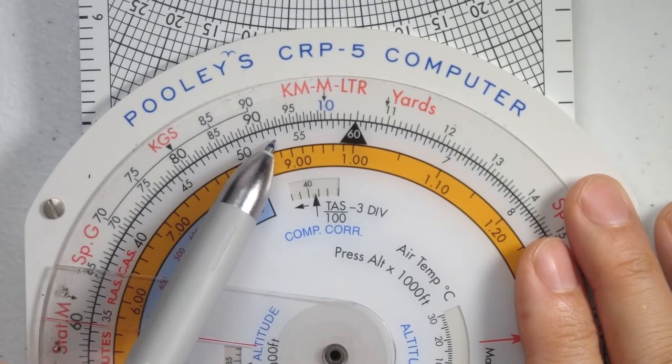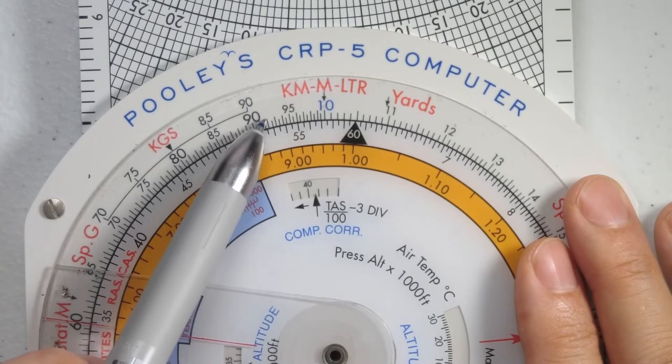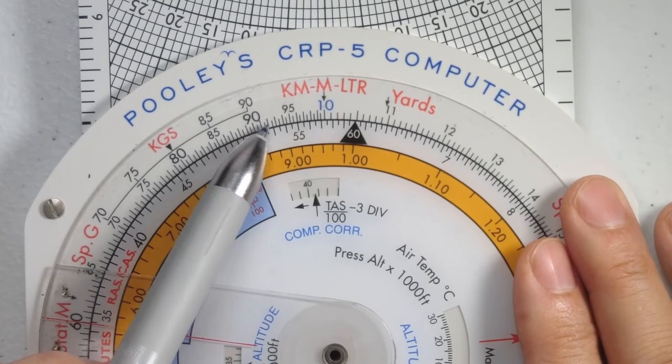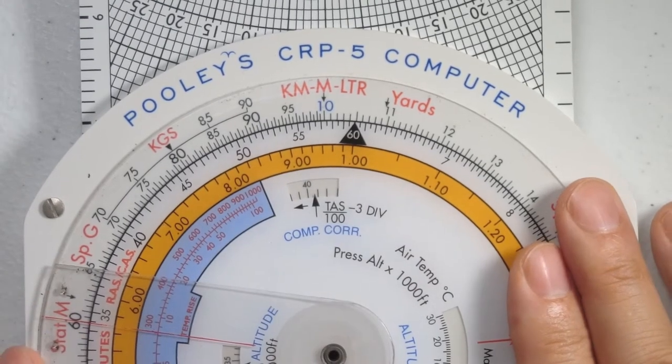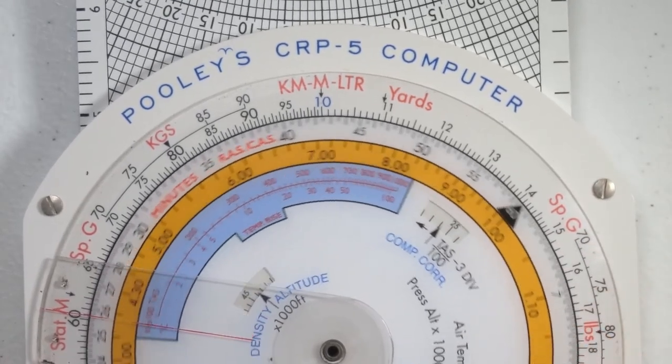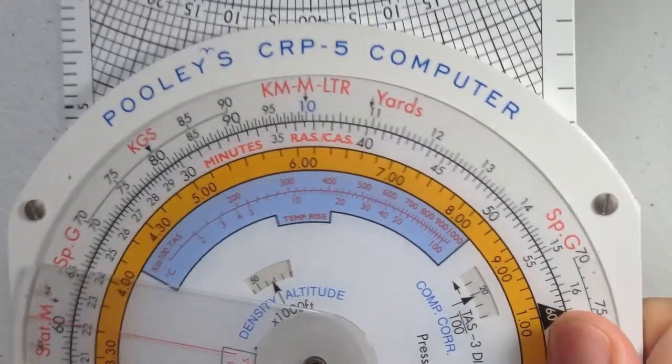And we are going to move 53 to correspond with the outer scale for a distance of 150 nautical miles which is on that side. So I am going to move 53 to line up with 150. And here we have 53 lined up with 150.